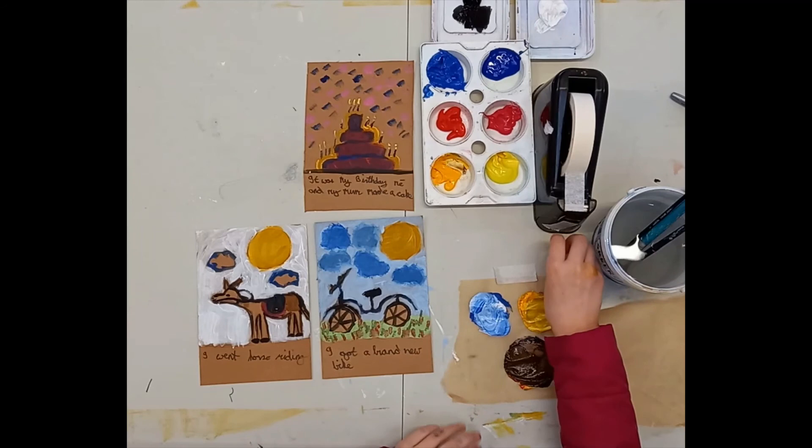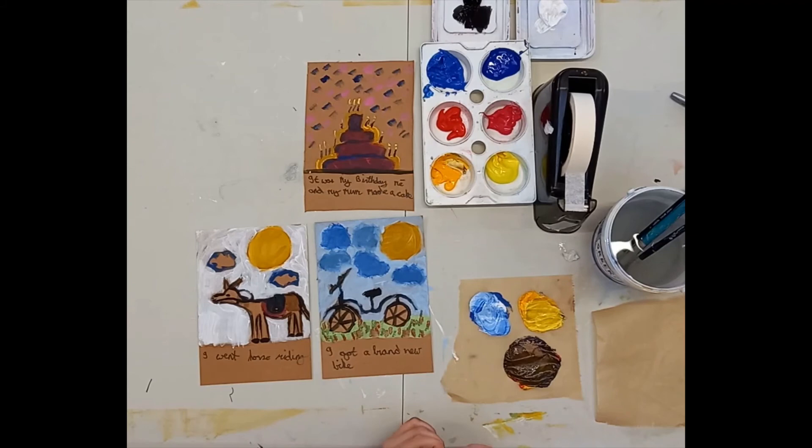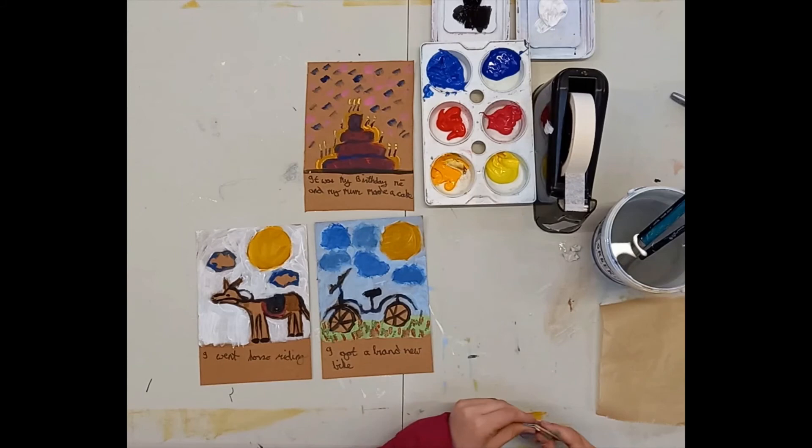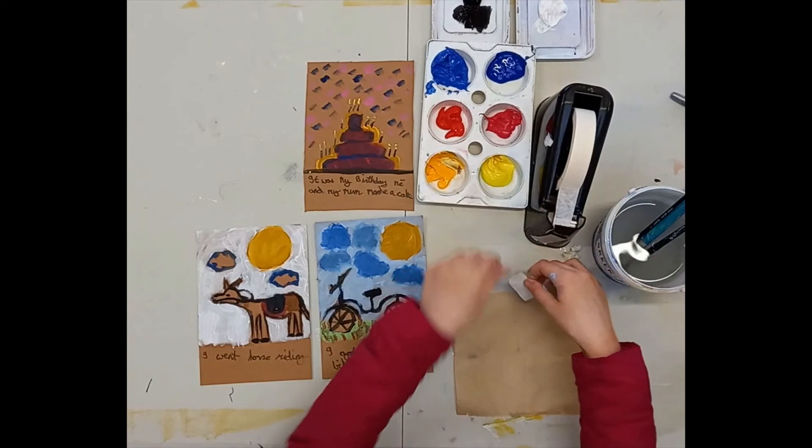Before we finish, I'd just like Rosa to show children how to change their palette. What we've used is some baking parchment. When it's all used up, just fold it up, throw it in the bin, and then replace it with a new palette by using your masking tape and taping it down to the table.